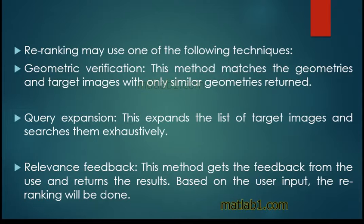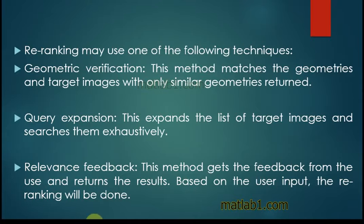Re-ranking may use one of the following techniques. Geometric verification matches the geometries, and target images with only similar geometries are returned. Query expansion expands the list of target images and searches them exhaustively. Relevance feedback gets the feedback from the user and returns the results; based on the user input, the re-ranking will be done. These techniques are well developed for text and can be used for images.